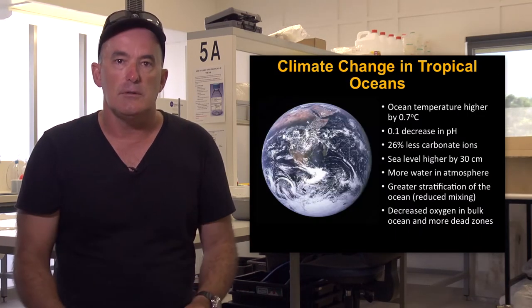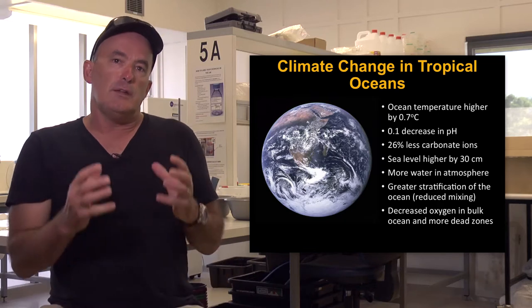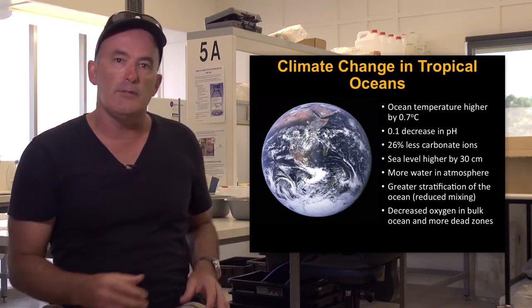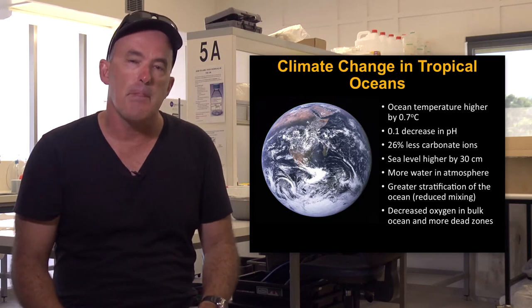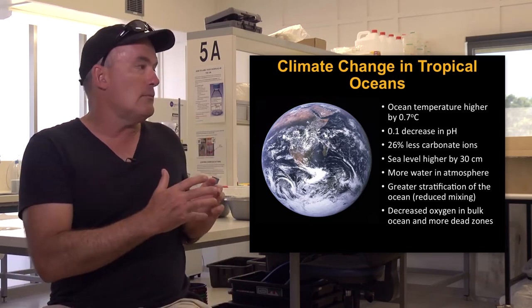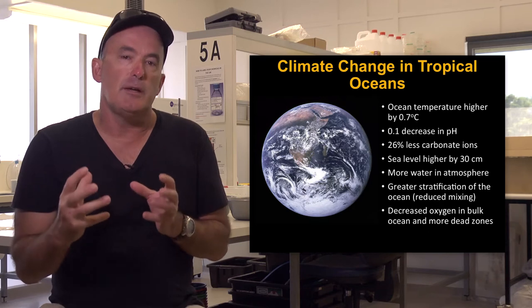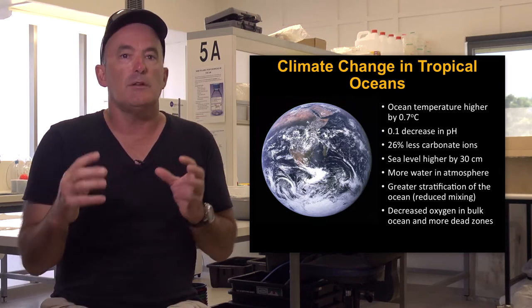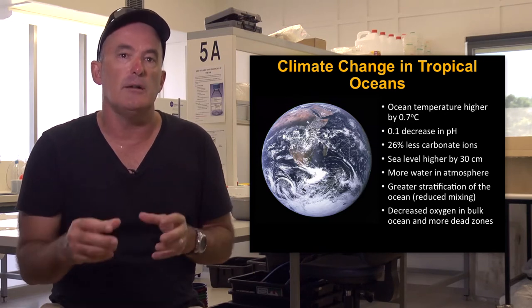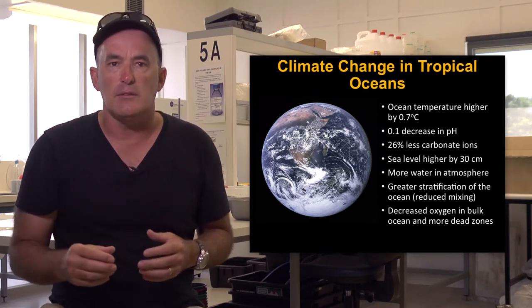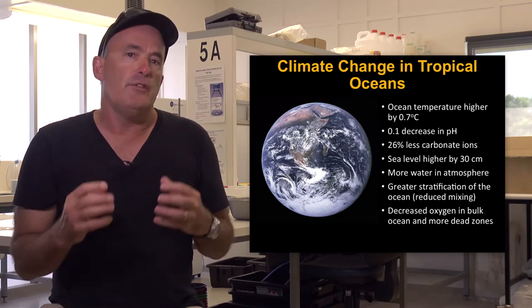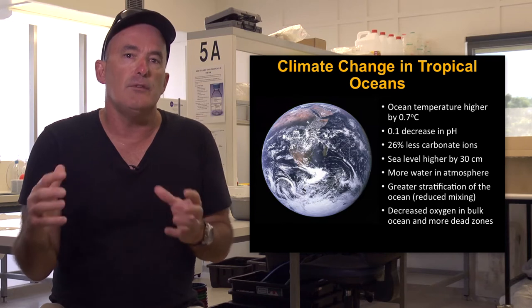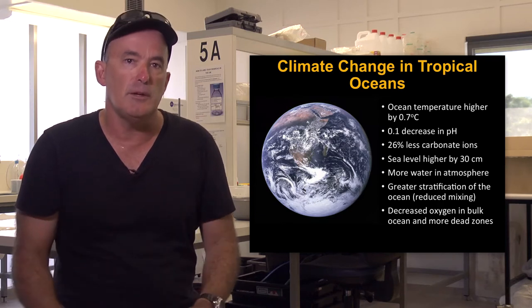Here are the major changes. Firstly, the average temperature of tropical oceans has increased by 0.7 degrees Celsius. At the same time, tropical oceans have become acidified by 0.1 pH units with an approximate decrease in the concentration of carbonate ions of around 26 percent. While this has been occurring, oceans have been expanding and sea levels have risen by about 30 centimeters on average.